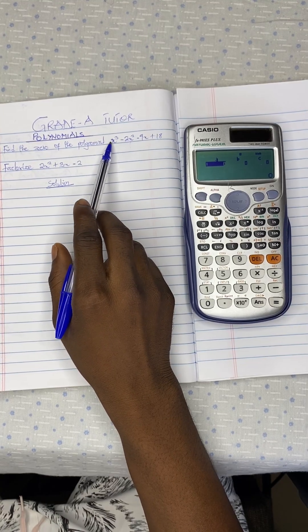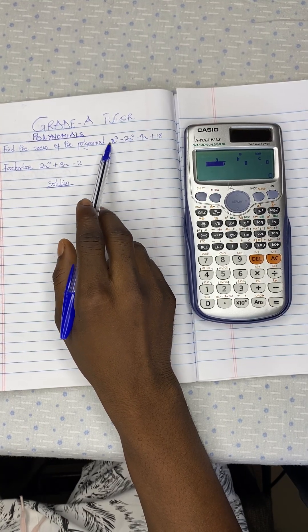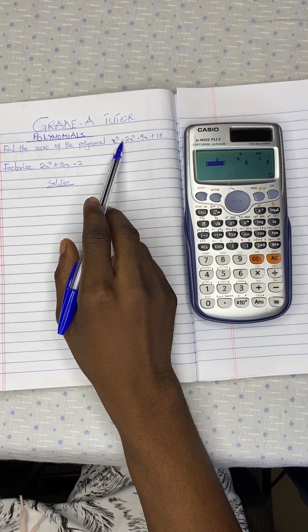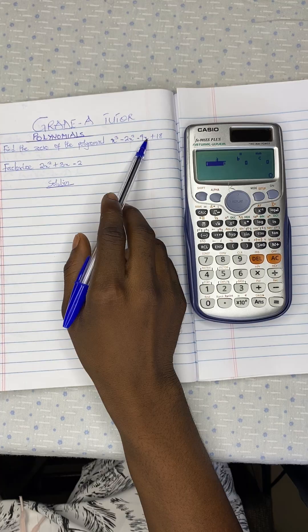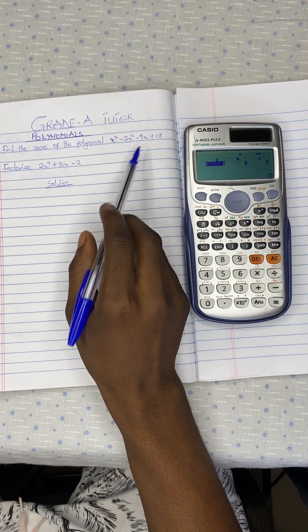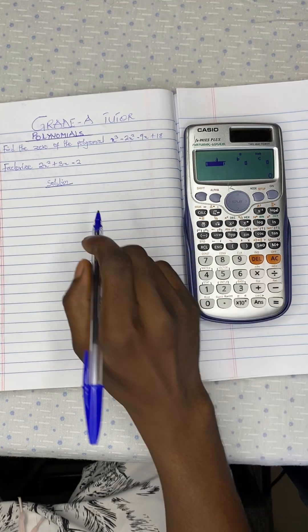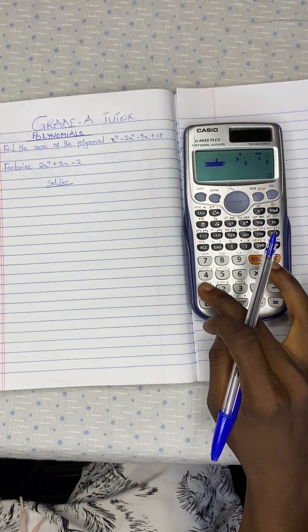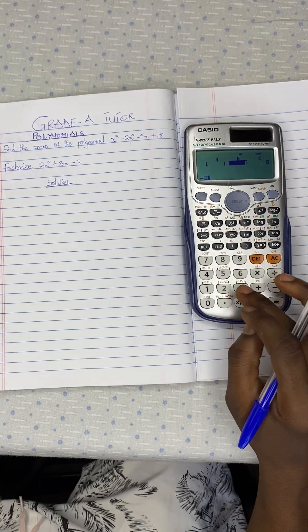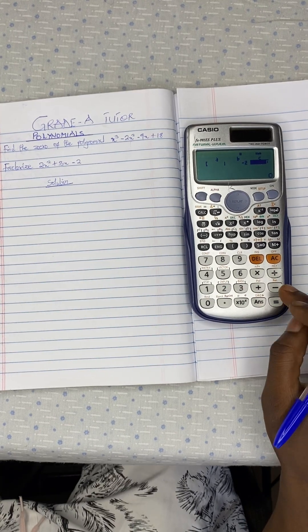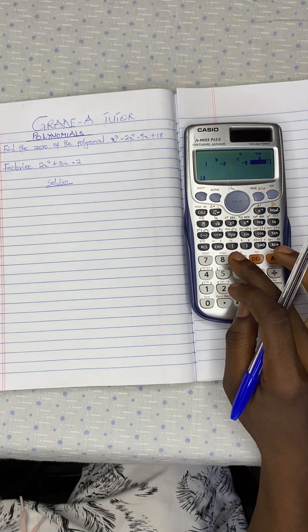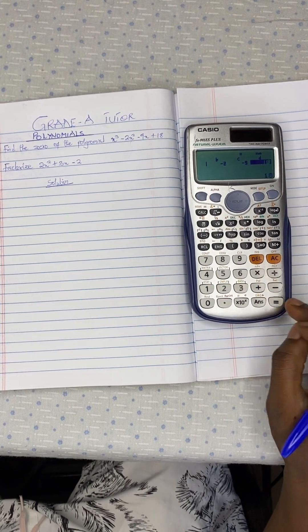For the first one, the coefficient of x cubed is 1. The coefficient of x squared is negative 2. Coefficient of x is negative 9, and we have our constant value to be 18. So 1, we press equal to. Negative 2, we press equal to. Negative 9, we press equal to. And 18, we press equal to.